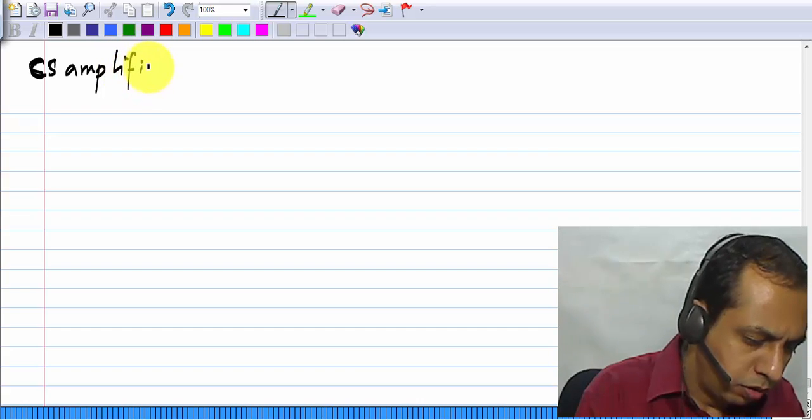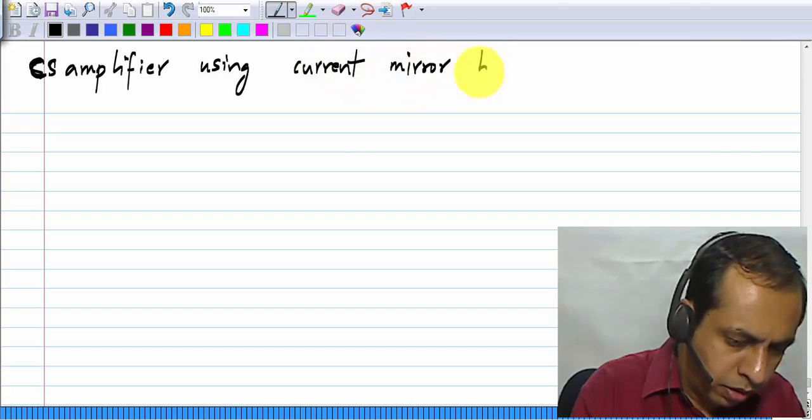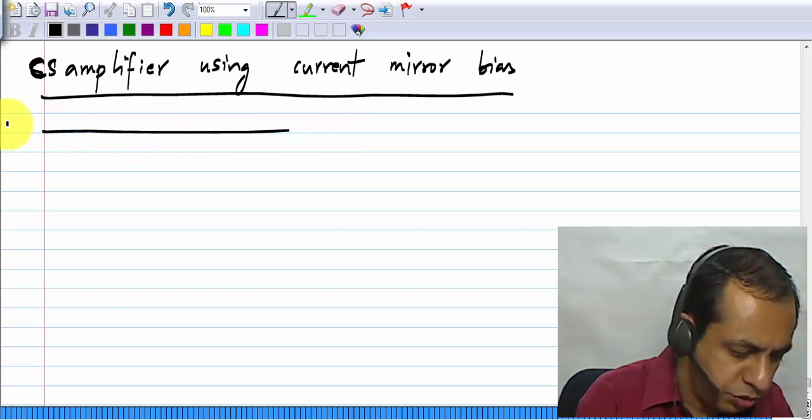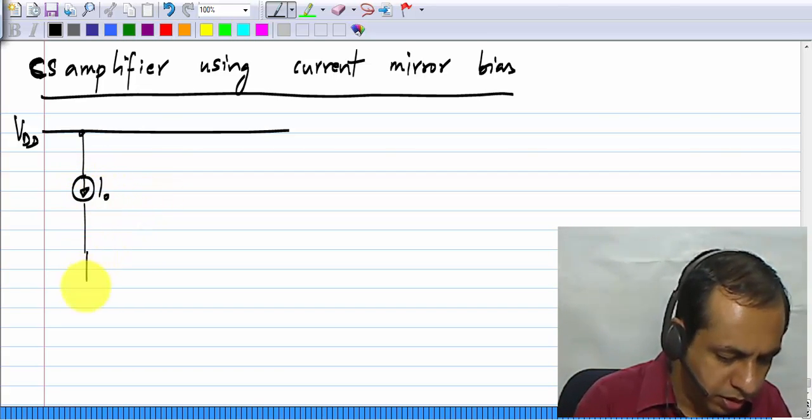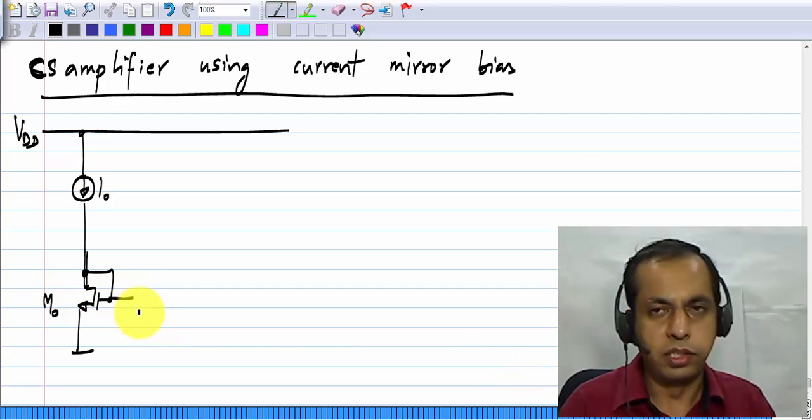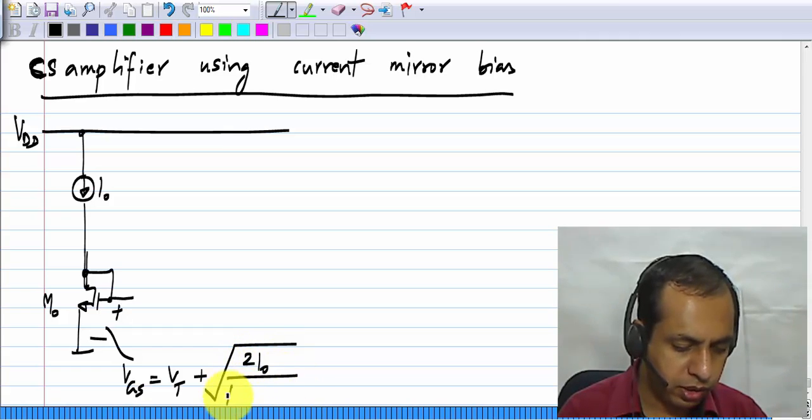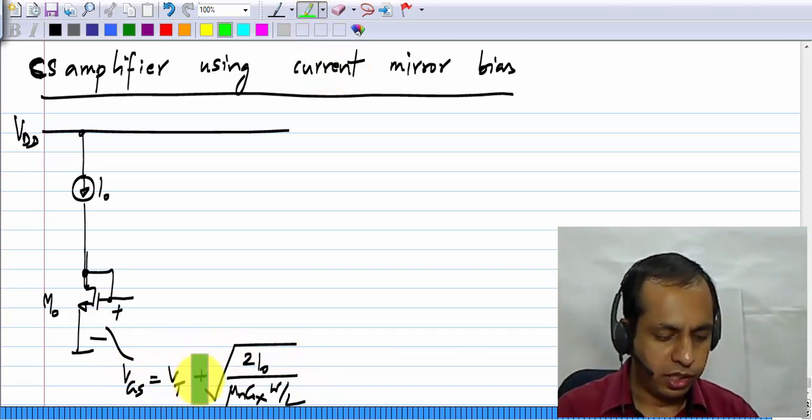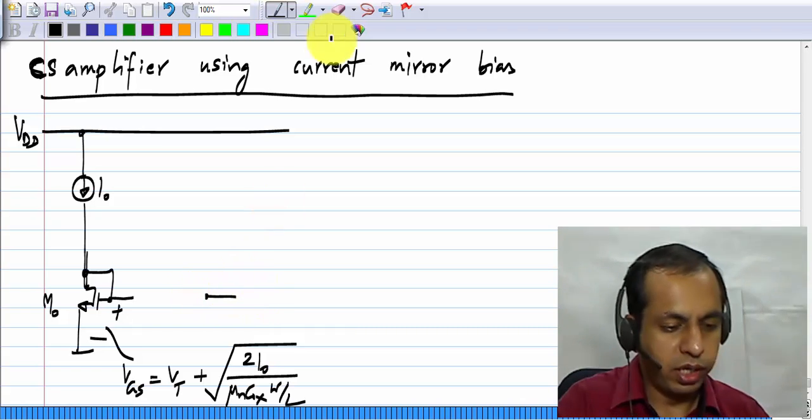We will realize the common source amplifier using current mirror bias. This upper line is assumed to be the supply voltage Vdd. I have not shown it always or explicitly pointed to it when I felt it was not necessary, but now I will show that. Here we have drain feedback around this transistor M0, and this gets biased with Vgs, which is the threshold voltage plus square root of 2 I naught by mu n C ox W by L. As I have pointed out earlier, this Vgs itself gives you correction for any deviations in Vt or current factor and so on.